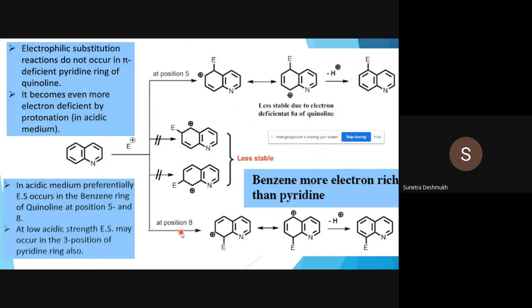Electrophilic substitution reactions do not occur in the pi-deficient pyridine ring of quinoline. The pyridine ring is electron deficient, and as the electrophile is also electron deficient, electron deficient and electron deficient cannot work. We have to look for the electron-rich benzenoid ring to react with the electrophile. It becomes even more electron deficient by protonation in acidic medium. When nitrogen is getting protonated, it becomes still more electron deficient, so electrophilic attack at this pyridine ring is highly impossible. In acidic medium, preferentially electrophilic substitution occurs in the benzene ring. For electrophilic substitution reaction in the benzenoid ring, we need highly acidic medium.